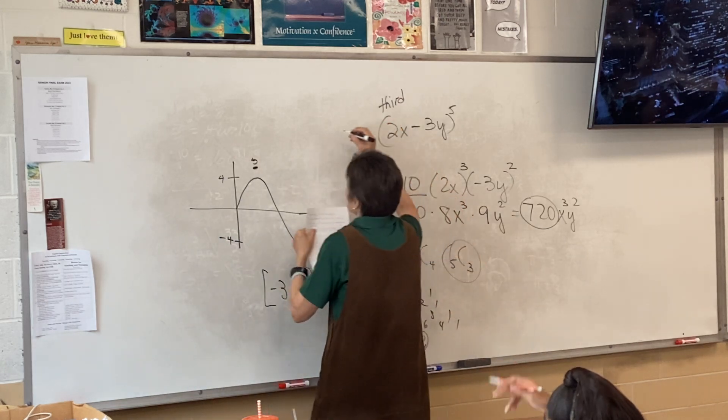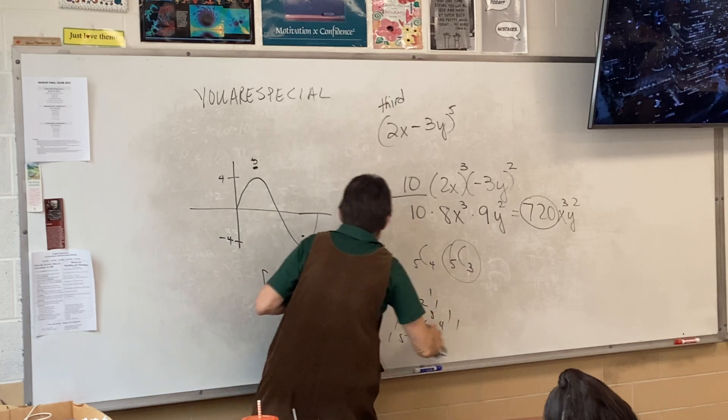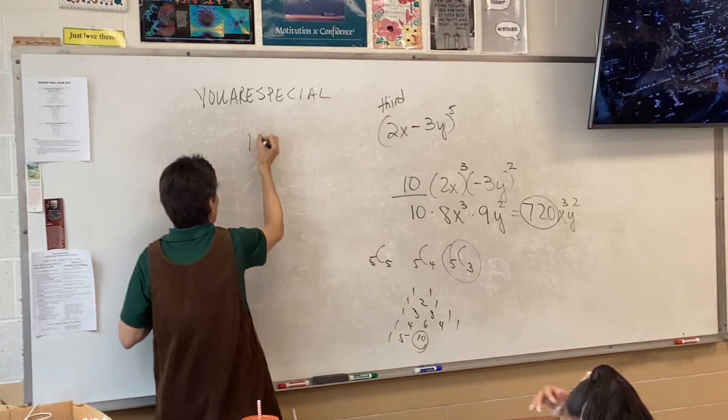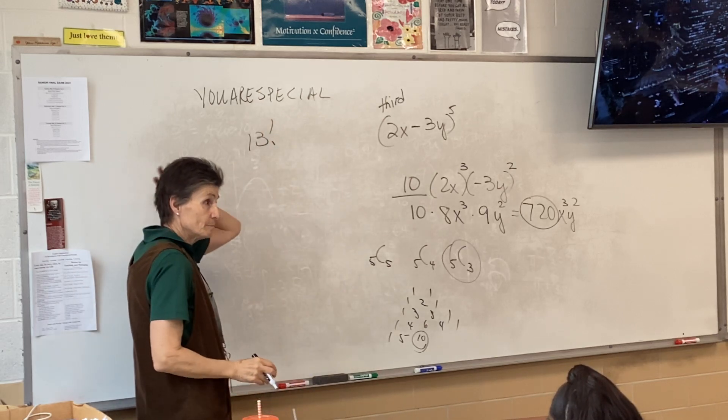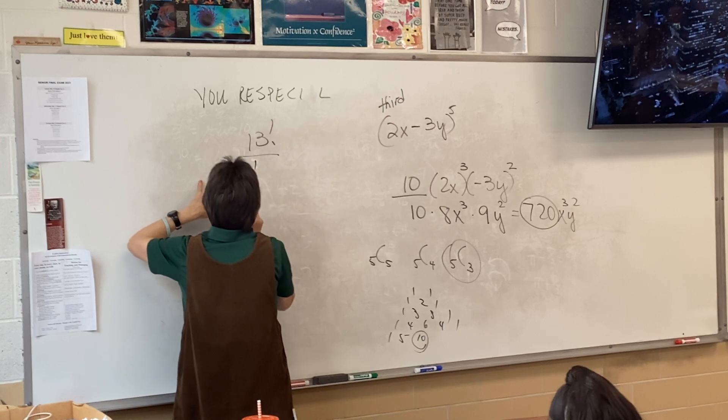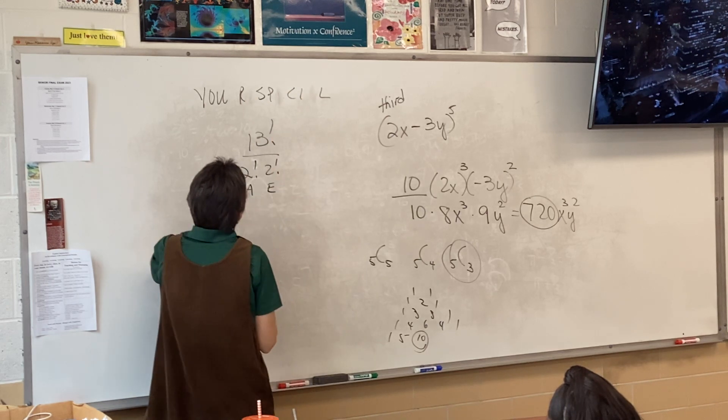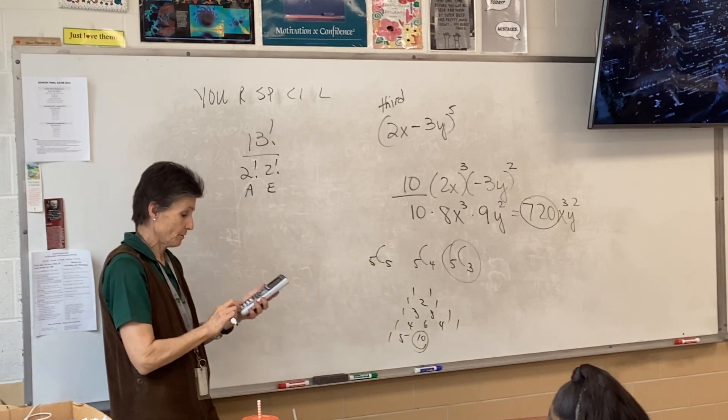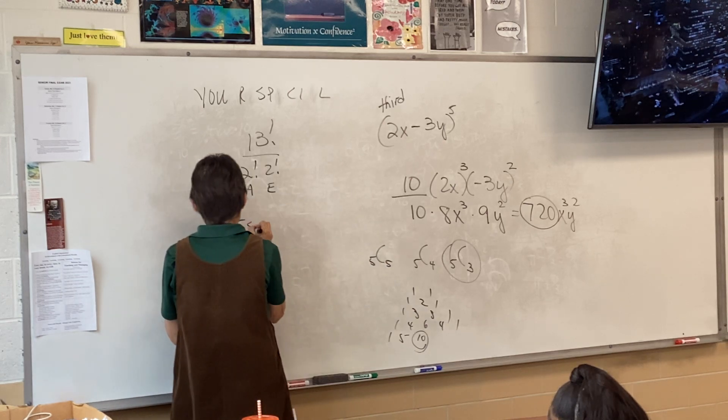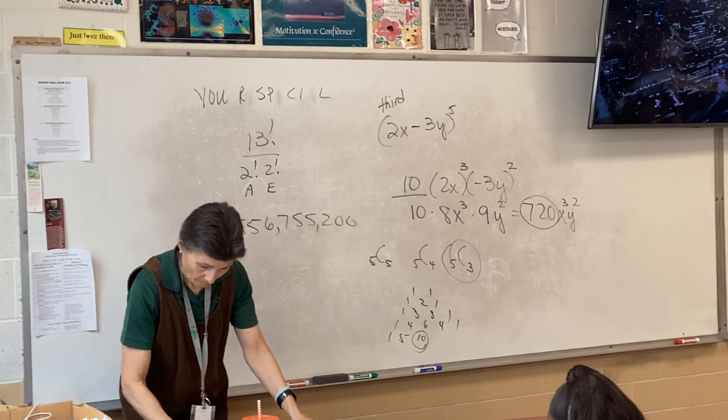How many ways can these letters be arranged? Count them up. 1, 2, 3, 4, 5, 6, 7, 8, 9, 10, 11, 12, 13 of them. So I start with 13 factorial. So what's repeated? There's an A and an A, so I have two A's. Two B's. So then I type that in on my calculator and hopefully you get this.